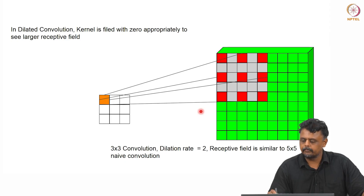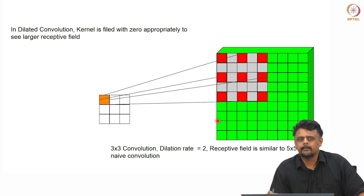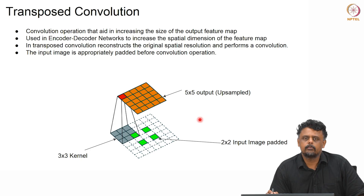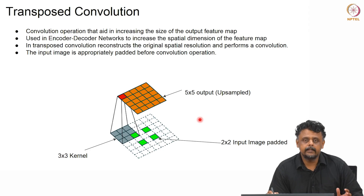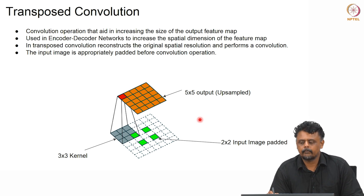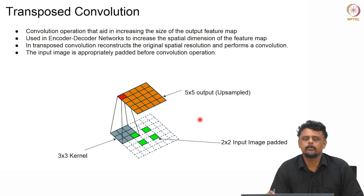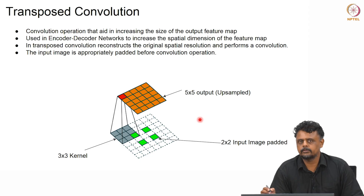To recap: the idea is to inflate the size of your kernel by inserting rows and columns of zeros so that you can get a larger receptive field. The number of zero rows and zero columns added is referred to as the dilation factor. The next topic is transpose convolution. The idea behind transpose convolution is to aid in increasing the size of the output feature map, and these are typically used in encoder-decoder networks on the decoder side to increase the size of the feature map as you go towards the output.